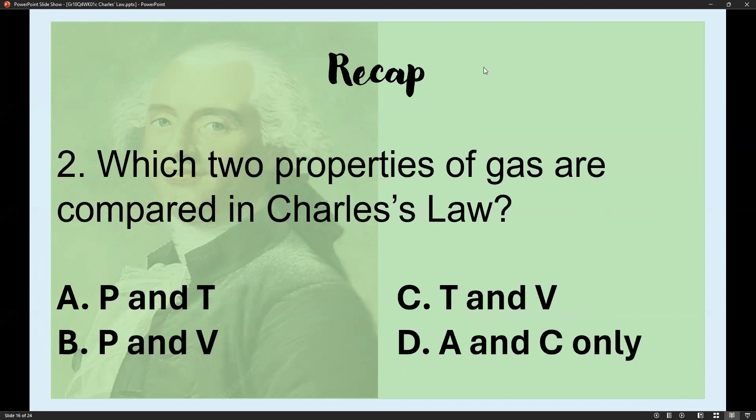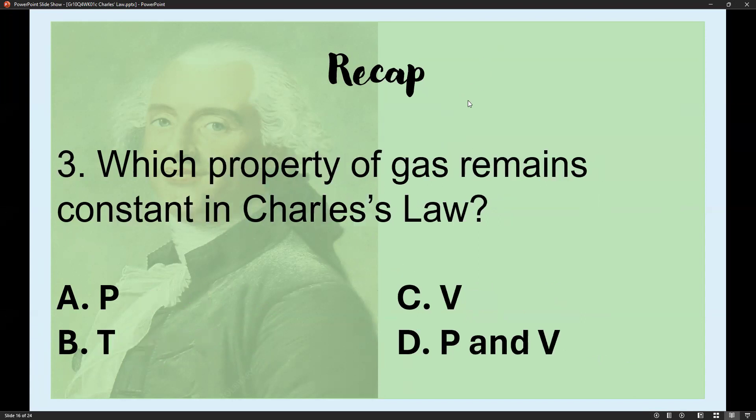Number two: Which properties of gas are compared in Charles's Law? As I mentioned, that's temperature and volume, letter C: T and V. Number three: Which property remains constant in Charles's Law? The one we never solved at all is pressure, letter A, represented by capital P.